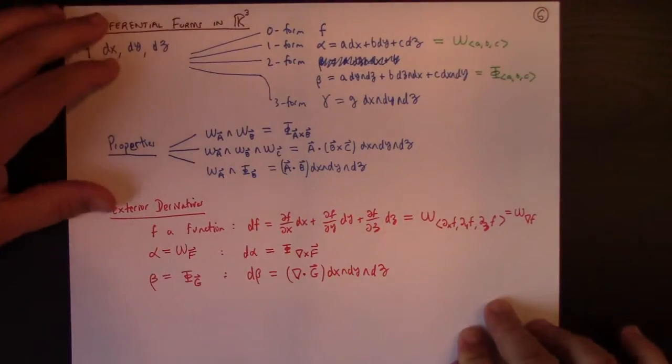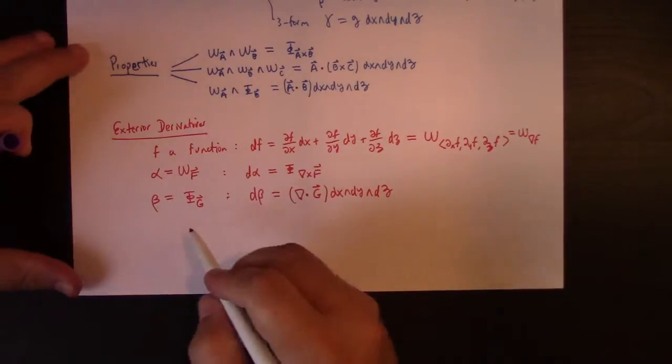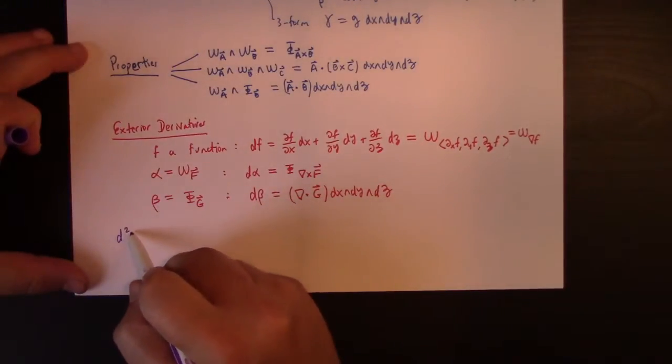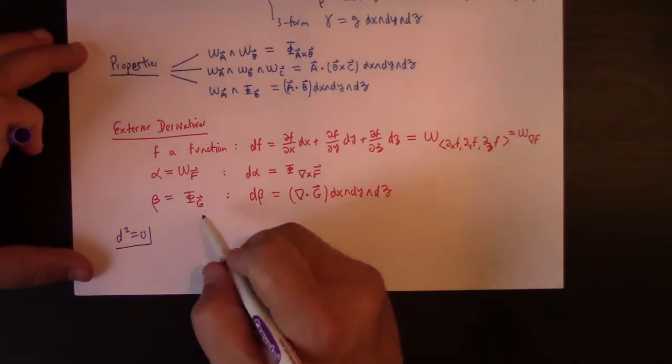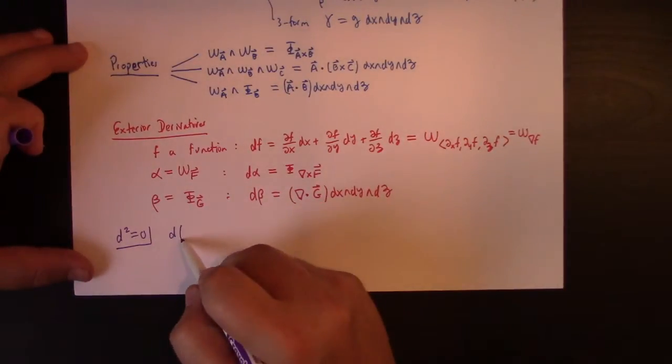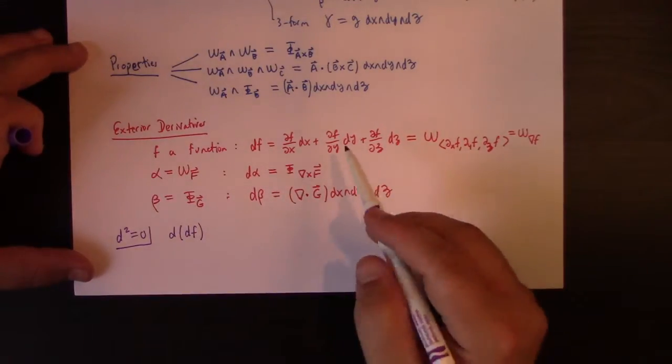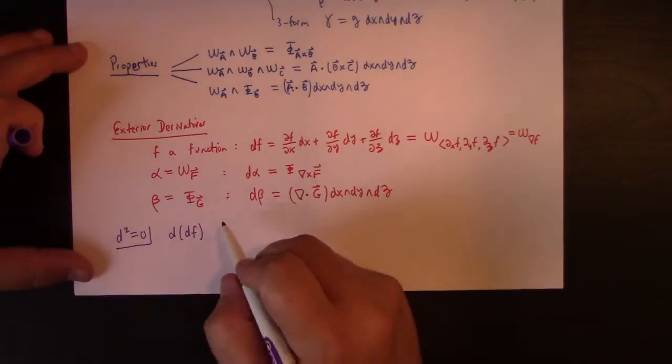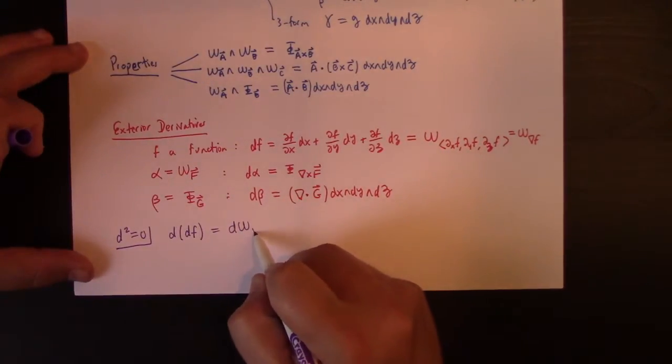So, how does, well, I guess I can do it on here. d squared equals to zero, what does that say? What does d squared equals to zero mean in this context? For example, we can calculate the second derivative, the second exterior derivative of f. And that will be d of, that's d of omega gradient of f.